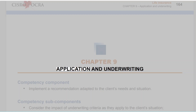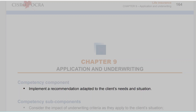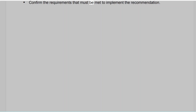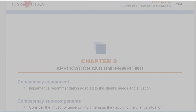Chapter 9: Application and Underwriting. Competency component: implement a recommendation adapted to the client's needs and situation. Competency subcomponents: consider the impact of underwriting criteria as they apply to the client's situation, and confirm the requirements that must be met to implement the recommendation.